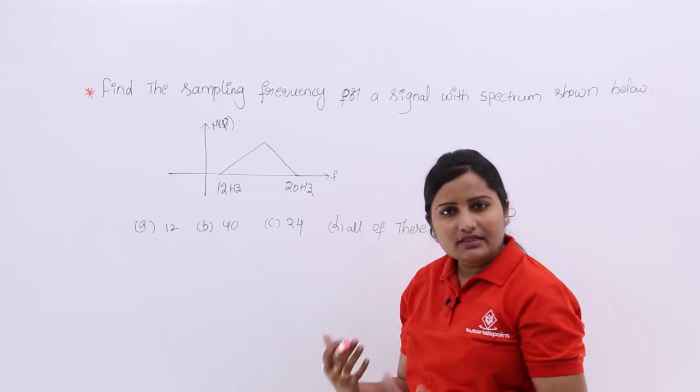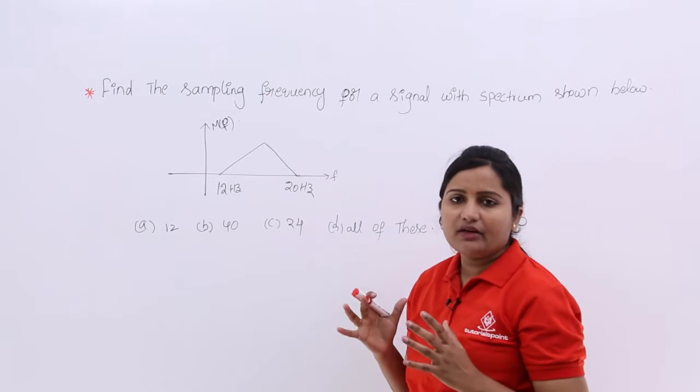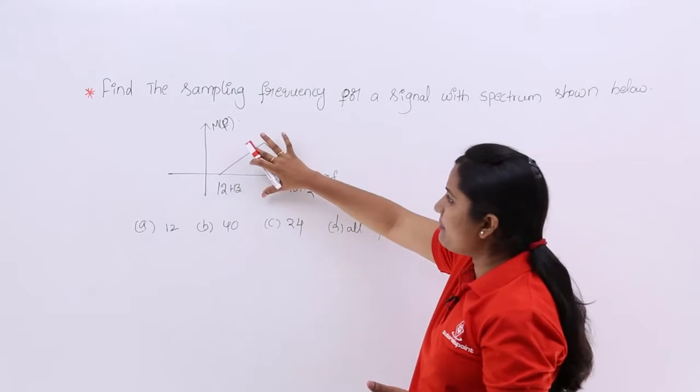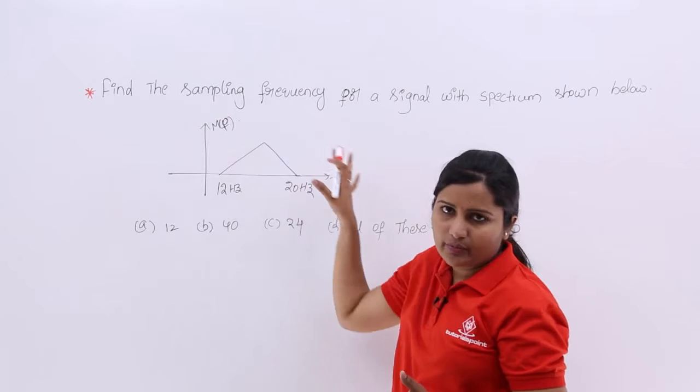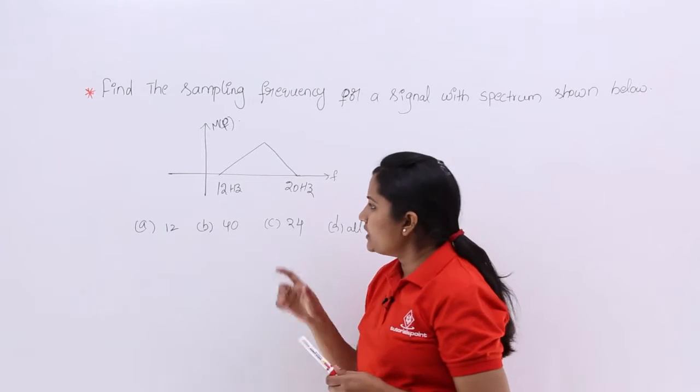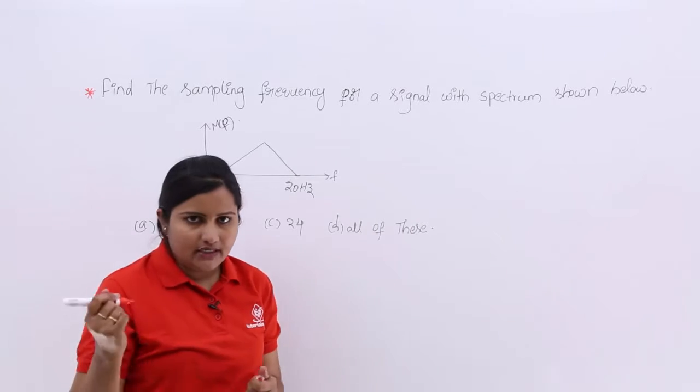Here, either in signal or in spectrum we can find the maximum frequency component of the message. This is the message spectrum m of f or omega. Here we can see two frequency components are there, in these two frequency components.